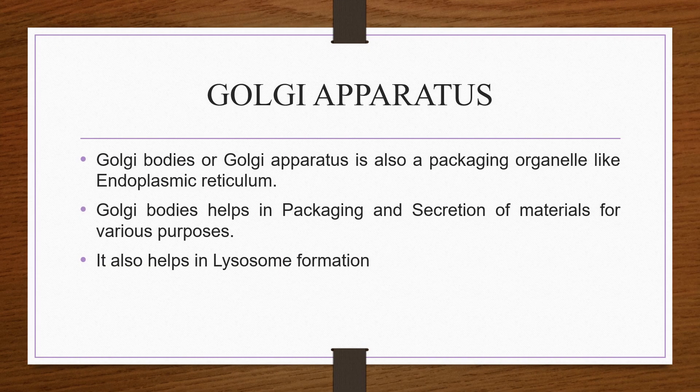Golgi apparatus. The Golgi bodies, or Golgi apparatus, are also known as packaging organelles, similar to the endoplasmic reticulum. They help in the packaging and secretion of materials for various purposes, such as packaging proteins and transporting lipids around the cell. The Golgi apparatus also helps in the formation of lysosomes.